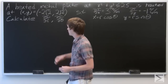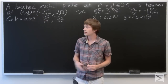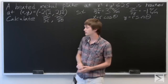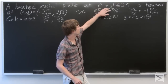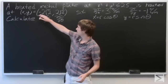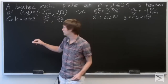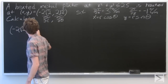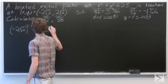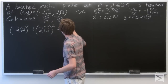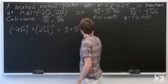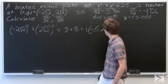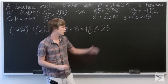First, we're going to want to verify that our point (x, y) is on the plate. So if we take (-2√2, 2√2) and plug it into x² + y², we see that this equals 16, which is less than or equal to 25, so it's on the plate.